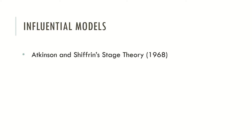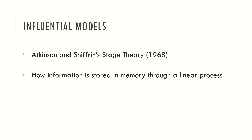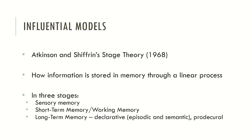Atkinson and Shiffrin also developed a stage theory, which describes how information is stored in memory through a linear process with three stages. Information first arrives at sensory memory, then passes to short-term memory or working memory, and is then encoded and retained in long-term memory, which may be differentiated as declarative or procedural.